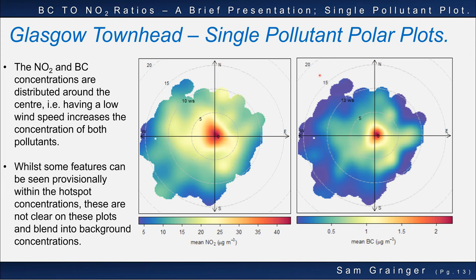The highest concentrations of BC and NO2 were found at very low wind speeds, below 2 metres per second. The NO2 and BC bivariate polar plots had a bullseye distribution, with moderate to high concentrations up to 35 micrograms per cubic metre for NO2 in most wind directions below 2 metres per second. There were patterns emerging at low to moderate concentrations, though these were poorly resolved. The distribution of BC was similar to NO2 in that the highest concentrations of 2 micrograms per metre cubed were found below 3 metres per second. High wind speeds above 10 metres per second led to much more drastic declines in BC concentrations than for NO2.